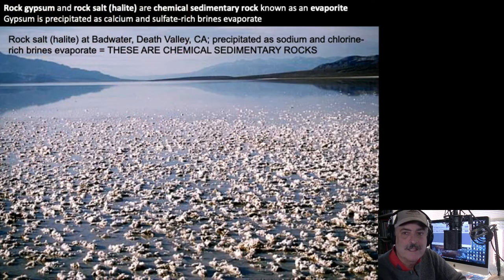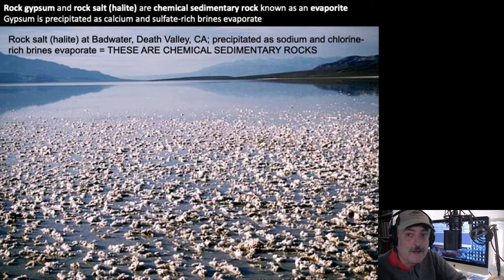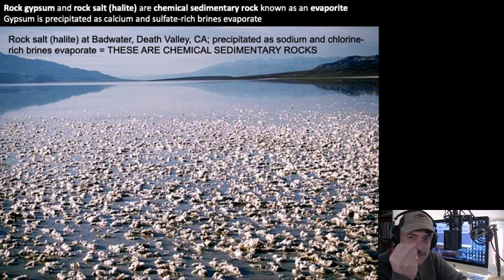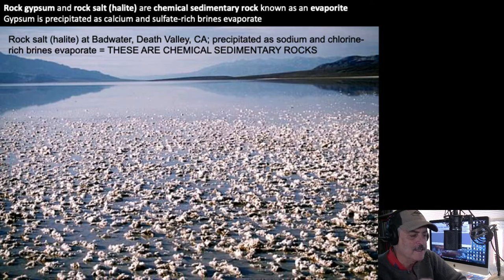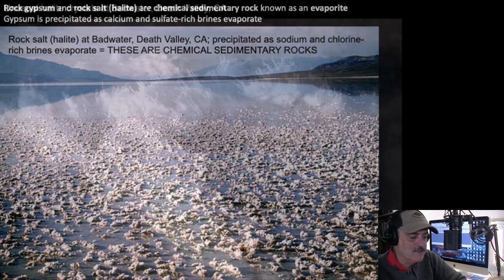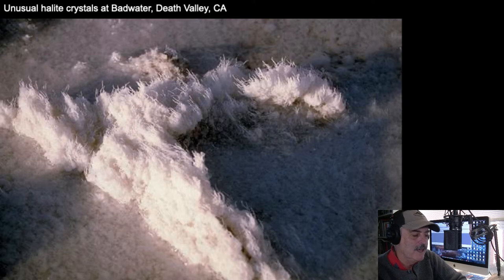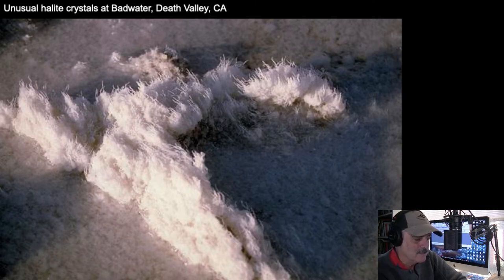Evaporite pans — sometimes called pans, really a lake — are rich with ions. As the water evaporates, the ions lock into minerals and get deposited. Here at Bad Water in Death Valley we're building crystals out of halite, a precipitate of sodium and chlorine. You think of halite as having cubic cleavage, but there are all sorts of strange structures — even hair-like crystals of halite that build upward and outward.